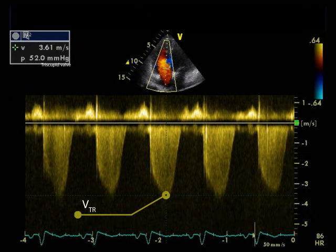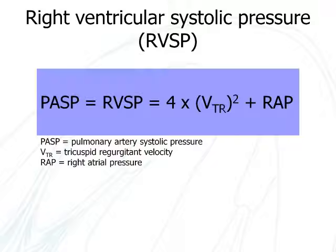This velocity reflects the difference in pressure between the right atrium and ventricle, and can be used to estimate right ventricular systolic pressure and, by assumption, pulmonary artery systolic pressure. Right ventricular systolic pressure can be calculated from the tricuspid regurgitant velocity using the Bernoulli equation as shown here. Where pulmonary stenosis is absent, right ventricular systolic pressure is assumed to equal pulmonary artery systolic pressure.